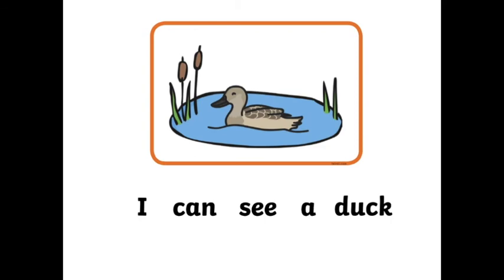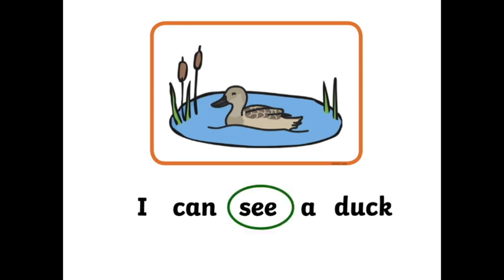This sentence has the word see in it. Are you ready? Say after me: I can see a duck. I can see a duck. Again: I can see a duck. Where is the word see in this sentence? Can you use your finger to point to the word see? Here it is — see. I can see a duck.